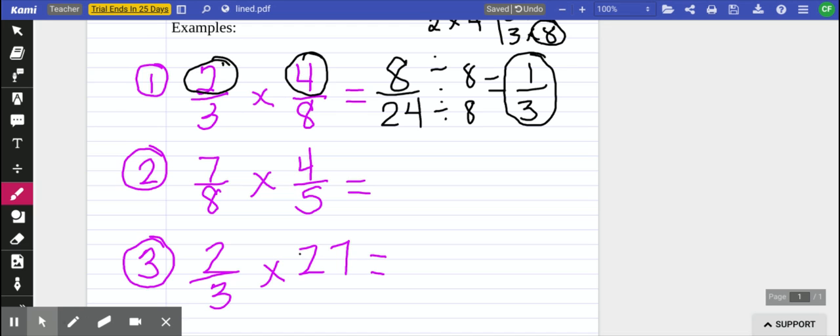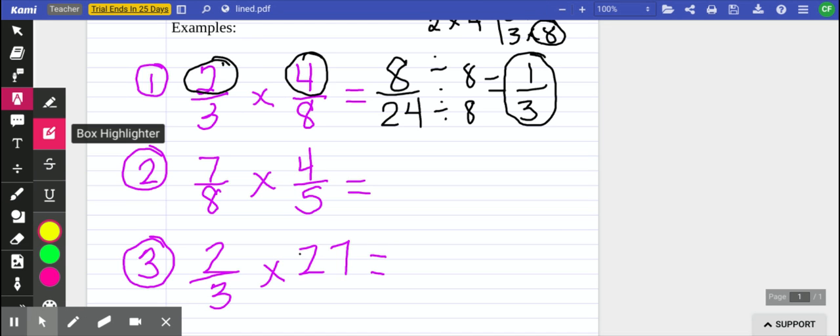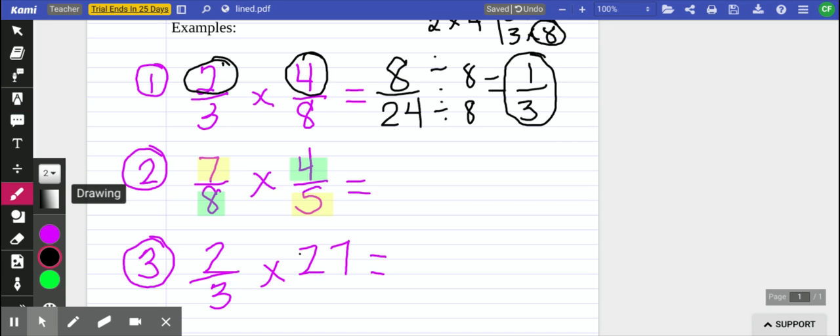So what I want to do right now is I want to highlight the 7 and this 5. Those numbers cannot be simplified. They're both prime numbers and the only factors they have are 1 and itself. But then I'm going to take a look at the 8 and the 4. Notice again that those numbers are across from each other, and I can simplify them.